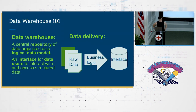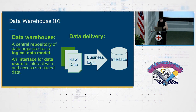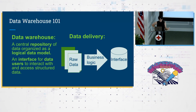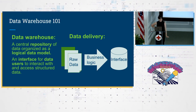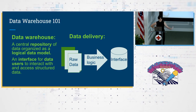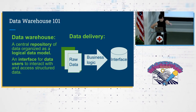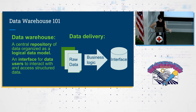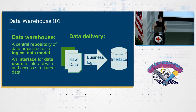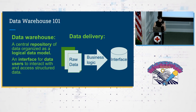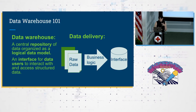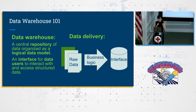I want to start by looking at what we mean when we talk about a data warehouse. A data warehouse is a central repository of data organized as a logical data model. It's not the data lake where we store all of the raw files, and it's not the results of the data that the analysts come up with. It's the place where we have taken the raw data, done some business logic to it, done some pipelining steps, and put it into an interface which is what the data analysts and data scientists on our data teams interact with.